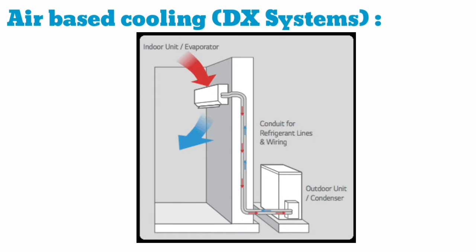However, it is not feasible to carry the refrigerant piping over large distances. Hence, the DX type is usually used for cooling small and medium sized buildings.